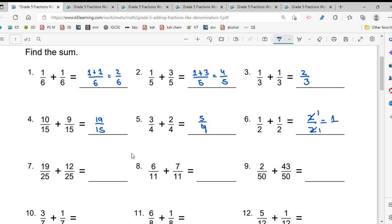Next wale ka, 25 upon 25. 19 plus 12 is 25. Oh, it's 31 by 25.